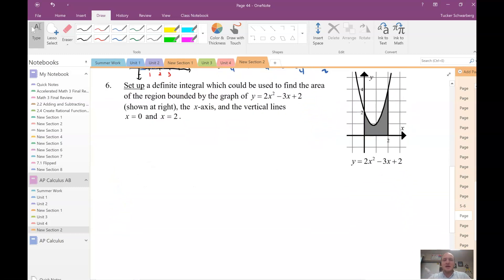All right. Number 6. They want you to set up a definite integral, which could be used to find the area of the region bounded by the graph of y, okay? And that's shown at the right, and the x-axis, and the vertical lines 0 to 2. So, again, I want to find the area, okay? So that's going to require an integral, and it's going to be definite. So I want my lower bound, they say, is starting here at 0. 0, and then the upper bound is 2. So I'm going to go from 0 to 2, okay?